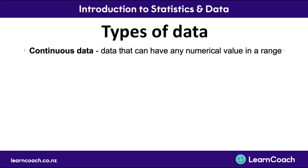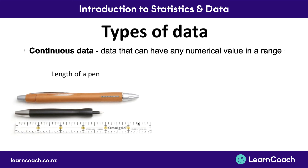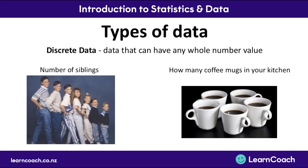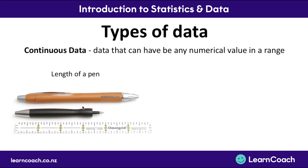That's different from continuous data, which is data that can have any numerical value in a range. Compared to discrete data which uses whole numbers like one, two, three, continuous data can be any value between whole numbers as well — meaning it includes decimal places. An example would be the length of a pen, which could be measured to the nearest centimetre, millimetre, or nanometre. Another example is the time to run 100 metres, which can be any value depending on how accurate the stopwatch is. With discrete data, you can't have any fractional value — for example, siblings must be a whole number.